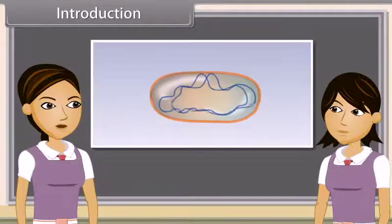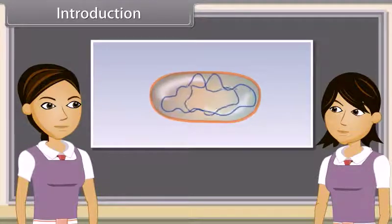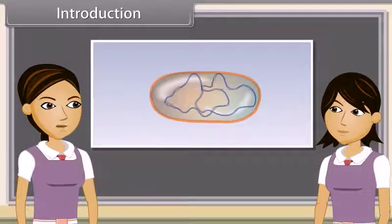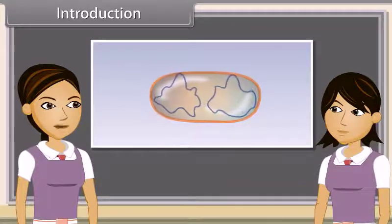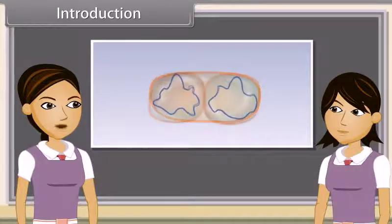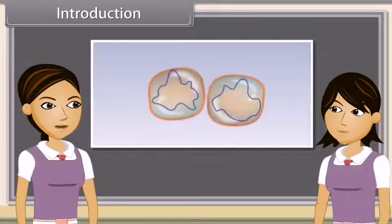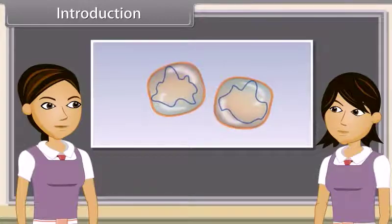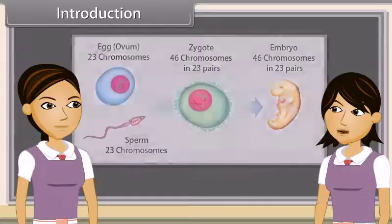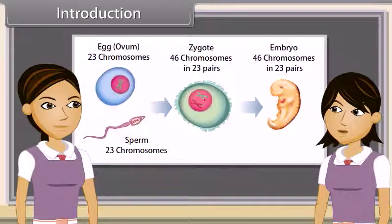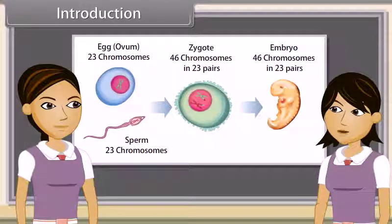As we have already discussed, reproduction is the ability of all organisms to produce young ones similar to themselves in most characters. The process which involves fusion of male and female gametes to form a new individual is known as sexual reproduction.